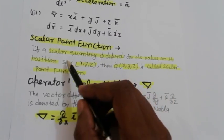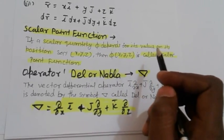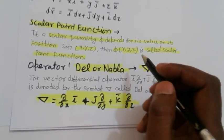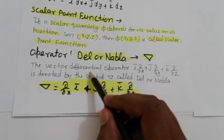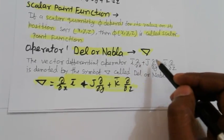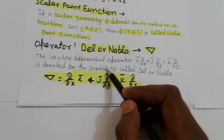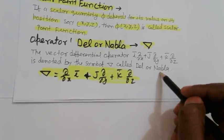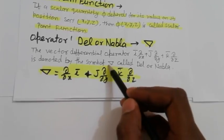Scalar point function: if a scalar quantity phi depends for its value on its position (x, y, z), then phi(x, y, z) is called a scalar point function. The operator del or nabla is a vector differential operator defined as: nabla = i(∂/∂x) + j(∂/∂y) + k(∂/∂z).